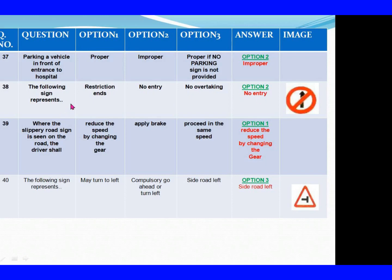Question 39: Where the slippery road sign is seen on the road, the driver shall. Option 1: Reduce the speed by changing the gear. Option 2: Apply brakes. Option 3: Proceed at the same speed. The right answer is Option 1: Reduce the speed by changing the gear. Question 40: The following sign represents. Option 1: May turn to left. Option 2: Compulsory go ahead or turn left. Option 3: Side road left. The right answer is Option 3: Side road left.